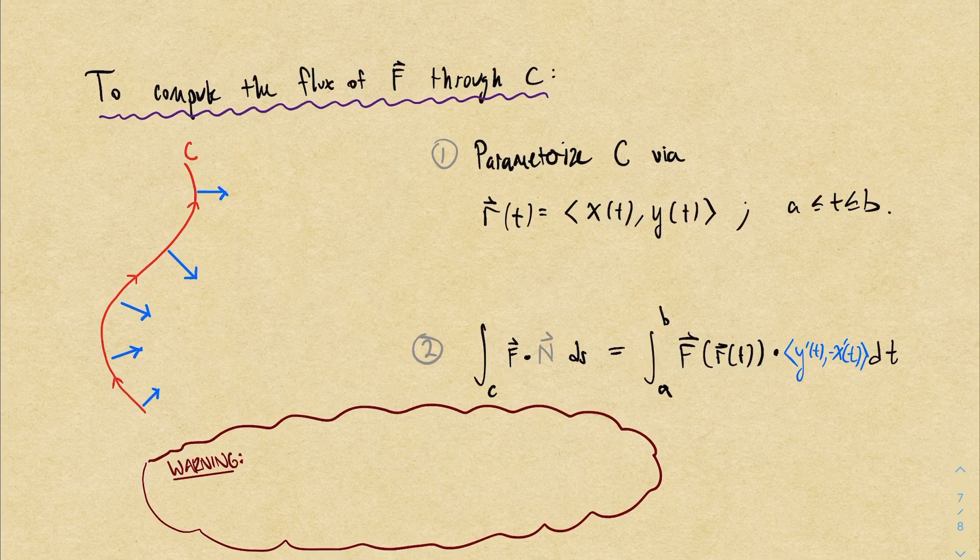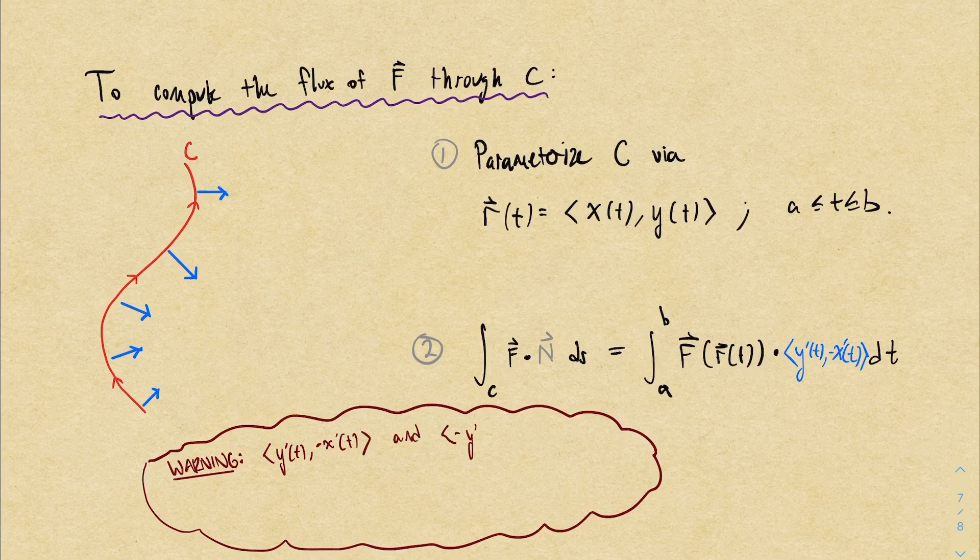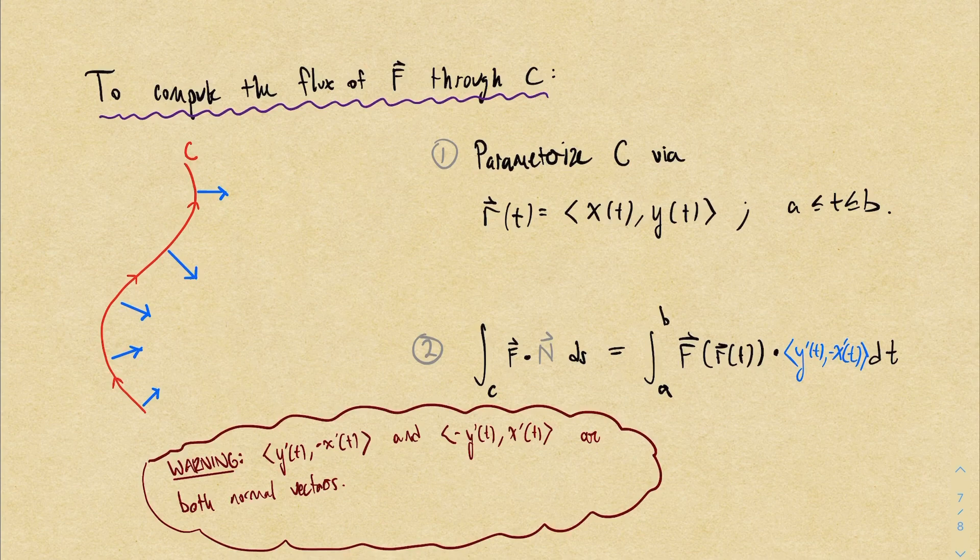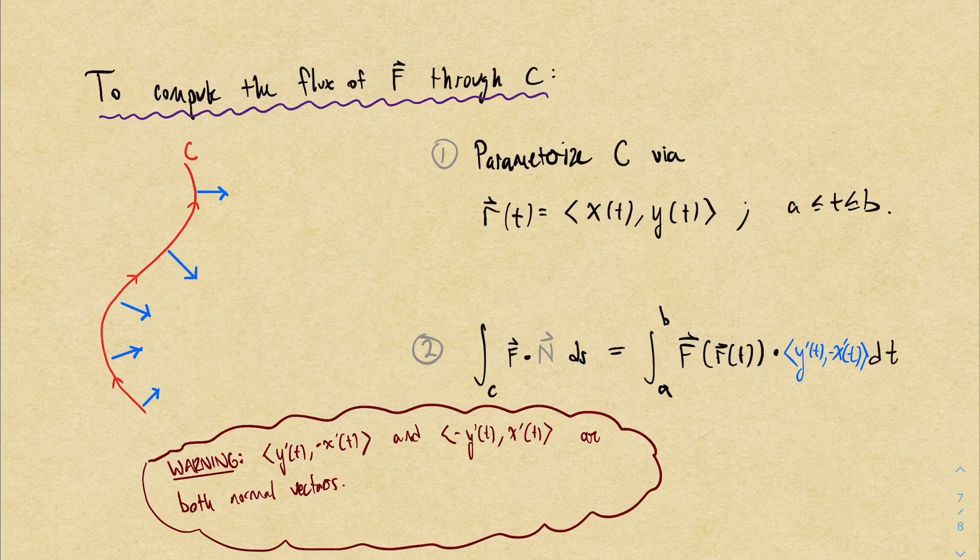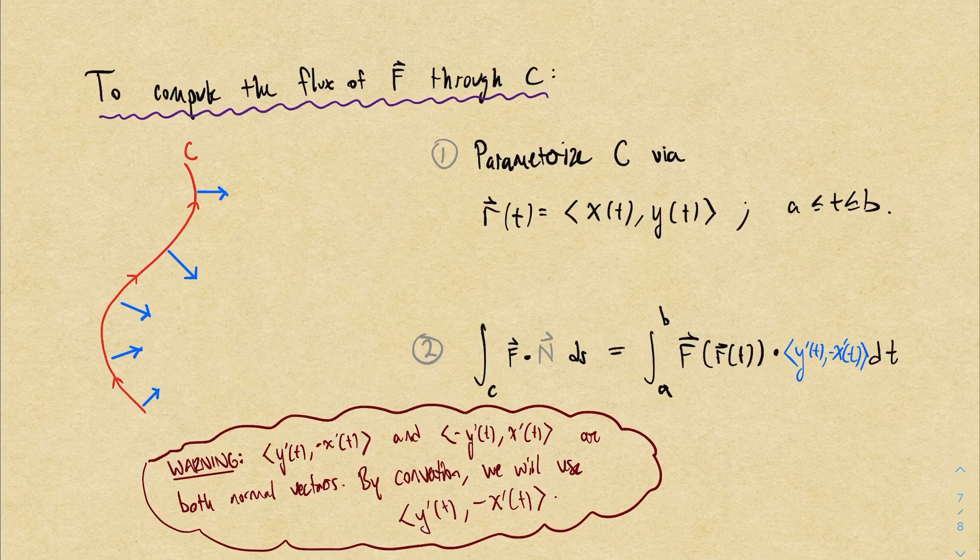Now as a quick warning, you should note that there are two different choices of normal vector that you could make. (y', -x') is one of them, but the negative of that vector is also a normal vector. (-y', x') would be pointing to the left. And the truth is, there's no good reason to prefer one over the other. So we choose one just by convention. For us, we will use the vector pointing to the right. In other words, we will always use the normal vector (y', -x'). But in real life, it's just a choice. And choosing one versus the other will just introduce a negative sign into your final answer.